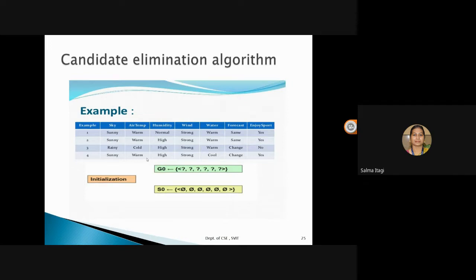We take the weather dataset to enjoy sports, with the target function as yes or no — these are your positive or negative examples. We have three positive and one negative sample. In Find-S, we used only positive samples, whereas in Candidate Elimination we also consider negative samples. We have a general hypothesis and a specific hypothesis — general hypothesis represented by question mark notation, and specific hypothesis represented by a null.